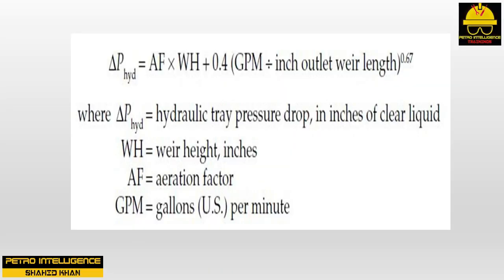This reduces the effective weight of the liquid on the tray due to aeration. To summarize, the weight of liquid on the tray, called the hydraulic tray pressure drop — increment P hydraulic — equals AF times WH plus 0.4 GPM divided by inch outlet weir length, raised to the power 0.67. Where increment P hydraulic equals hydraulic tray pressure drop in inches of clear liquid, WH equals weir height in inches, and AF equals aeration factor.